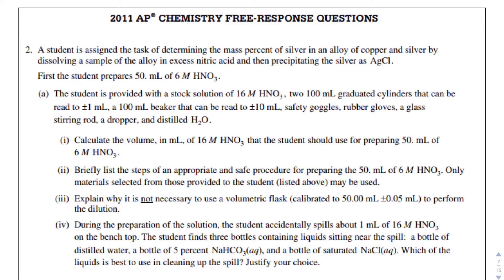In this video, we're going to look at number 2 from the 2011 AP Chemistry free response questions. In number 2, a student is assigned the task of determining the mass percent of silver in an alloy of copper and silver. An alloy is just a mixture of metals, and mass percent is grams of silver over total grams. To turn it into a percent, multiply by 100. We're going to need that formula later on.